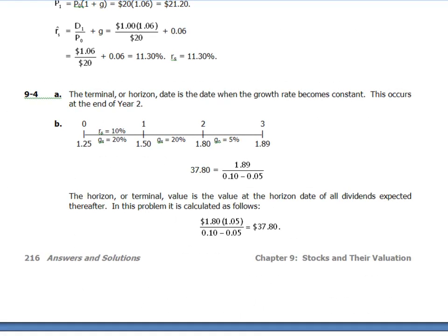The terminal or horizon date is the date after which g becomes constant. In this problem, the company grows at 20% for the first two years, then at 5% forever, so the terminal date is year two. On the timeline: g1 = 20%, g2 = 20%, and g3 onward = 5%.